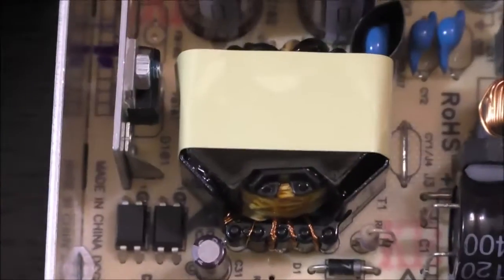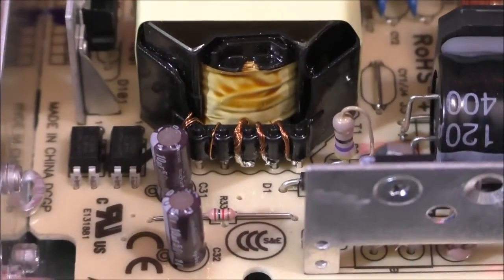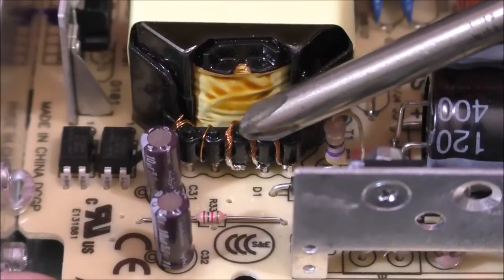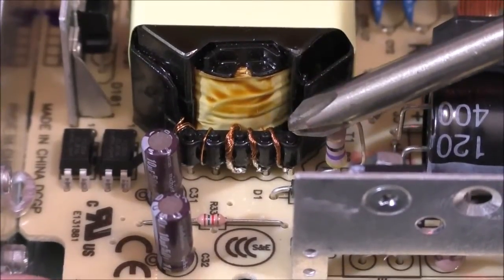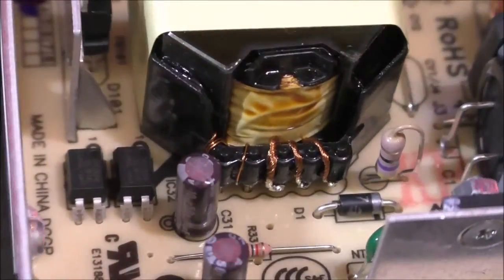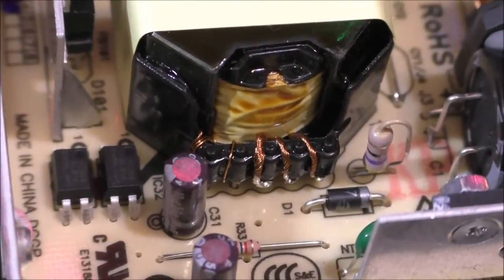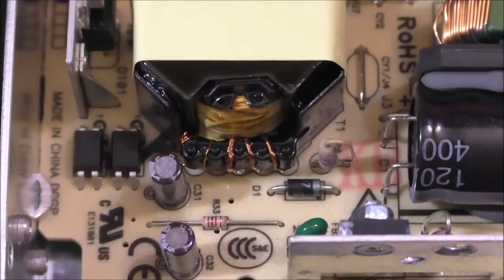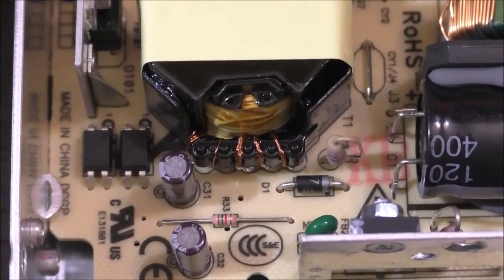Now one thing I noticed about this switching transformer was that it was wound using litz wire. As you can see, it's these wire strands over here. And they're actually made of much thinner strands of insulated copper wires twisted together to form a larger conductive strand. And you might be wondering, why is that so? Why can't they just use a single thicker strand of wire?